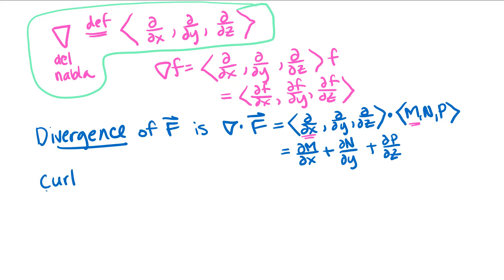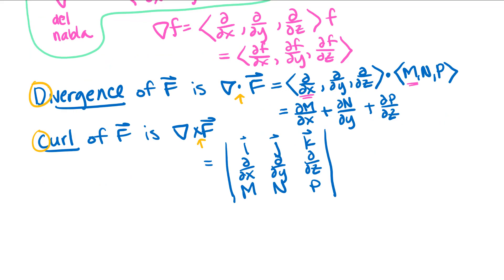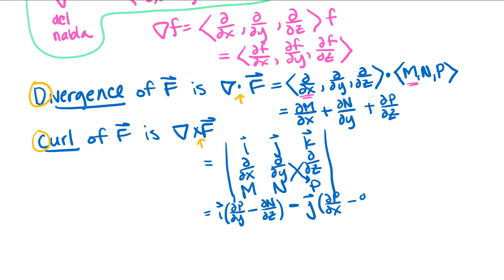The other new concept is the curl of a vector field f. The divergence is a dot product and the curl is a cross product — easy to remember because they conveniently start with the right letter. For del cross f, a cross product of two vectors gives another vector. Writing it out using matrix notation, the i component is del-p/del-y minus del-n/del-z; the j component (with the minus sign from the cross product) is del-p/del-x minus del-m/del-z; and the k component is del-n/del-x minus del-m/del-y.